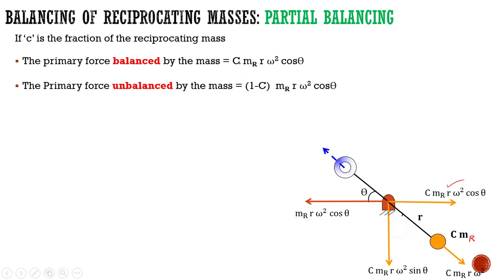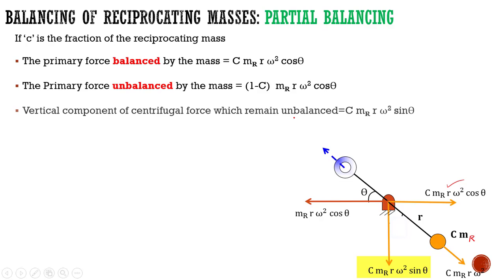This is the fraction of value which is balanced; the remaining fraction will be unbalanced — that is (1 - c)·mr·r·ω²·cosθ. So, the vertical force remains unbalanced, which is c·mr·r·ω²·sinθ.